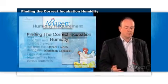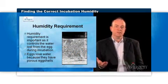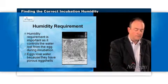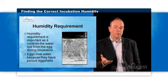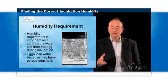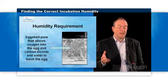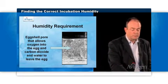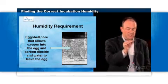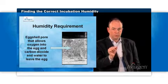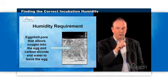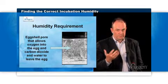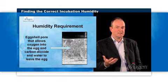Why is humidity important? Humidity is important because it controls how water is lost from the egg during incubation. Eggs lose water because they have porous eggshells. This picture shows an electron micrograph of an eggshell cross-section, and what you can see running across the picture is a respiratory pore. This pore allows oxygen to enter the egg and carbon dioxide and water to leave the egg, and we must have these pores so the embryo inside the egg can breathe.